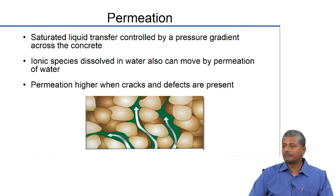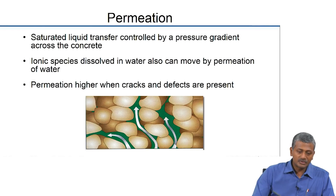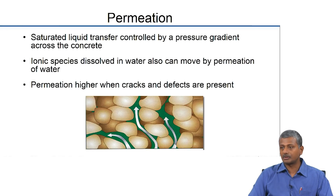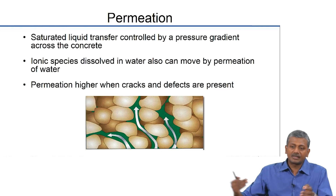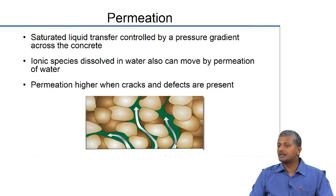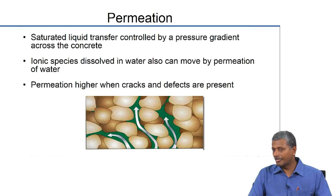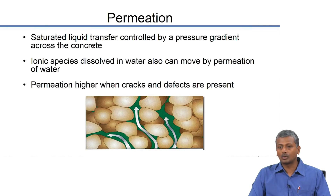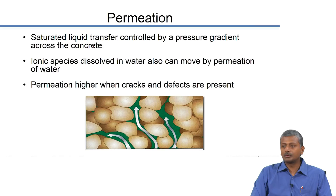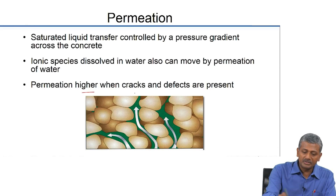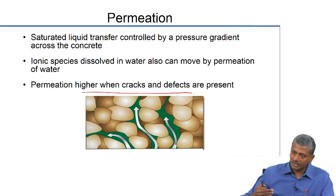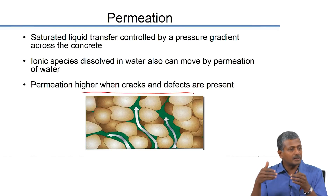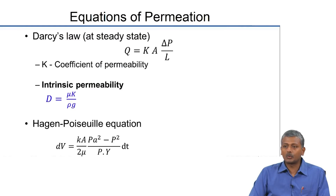The other major transport mechanism in concrete is permeation — flow under a hydraulic or pressure gradient. Saturated liquid transfer is controlled by a pressure gradient across the concrete. If you have high pressure of water on the outside and low pressure on the inside, it will drive water into the concrete. Ionic species dissolved in water — for example sulphates in groundwater — can also be carried by the water into the concrete because of permeability. Permeation is obviously higher when there are cracks and defects present. This is described by Darcy's law under steady-state conditions.